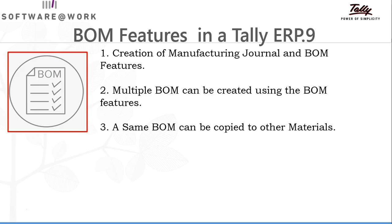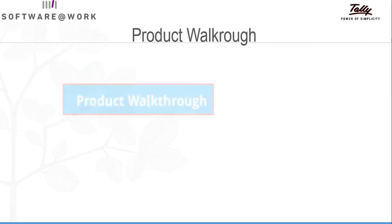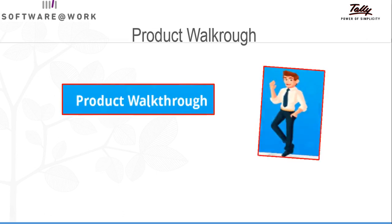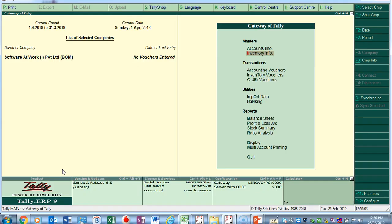All such features are available in Tally ERP 9. We can create multiple BOMs, use the BOM during manufacturing journal entry, and a same BOM can be copied to another material by changing the quantity, item, or other parameters — so the repeated process of refilling raw material details will be avoided and it will save time. Now we will walk through how to create the Bill of Material.